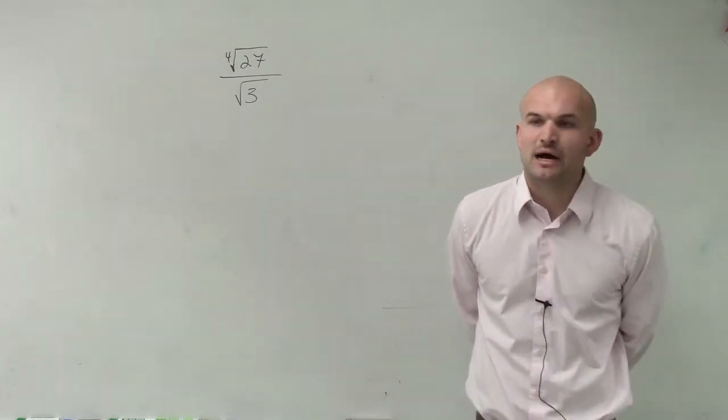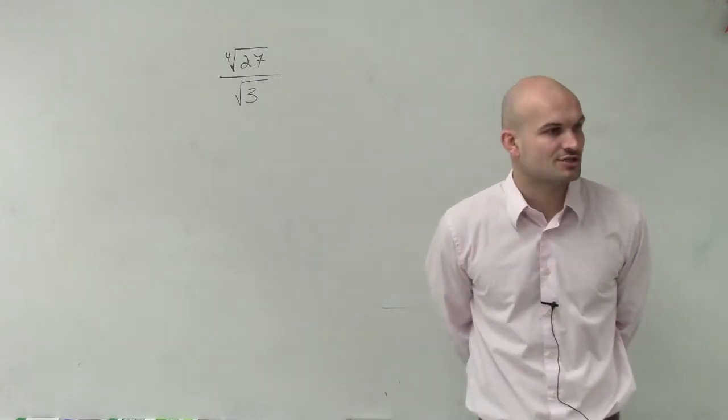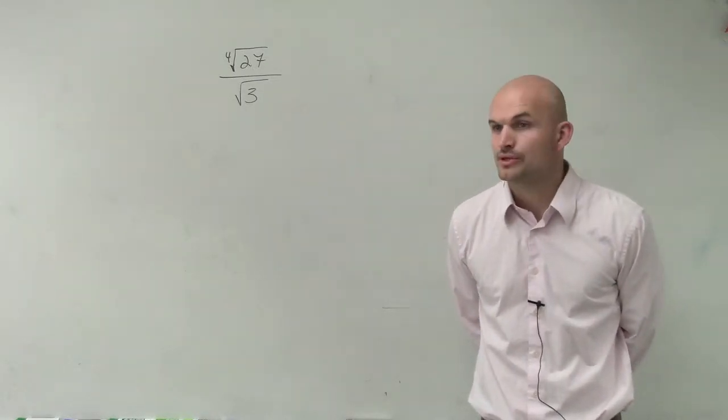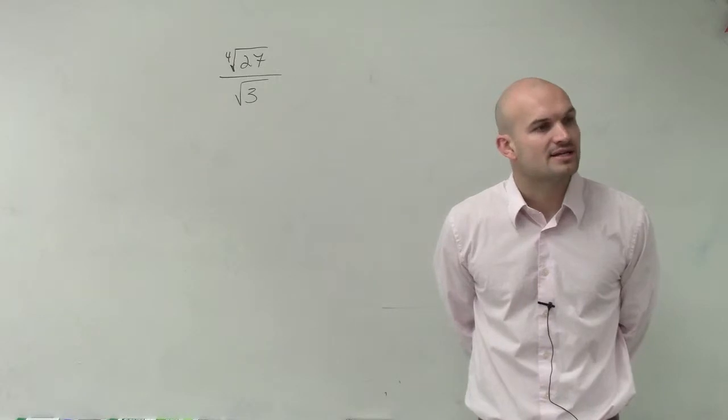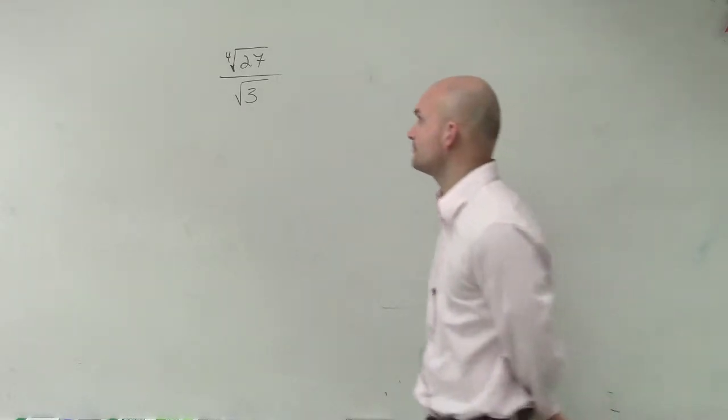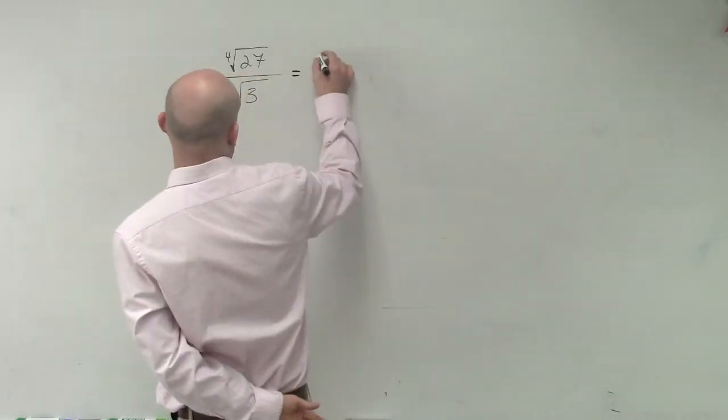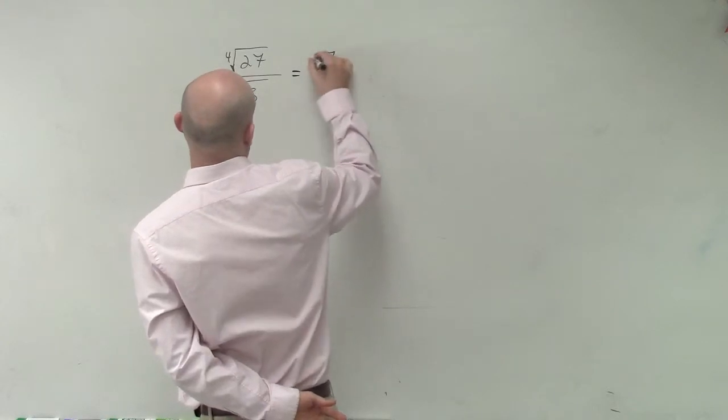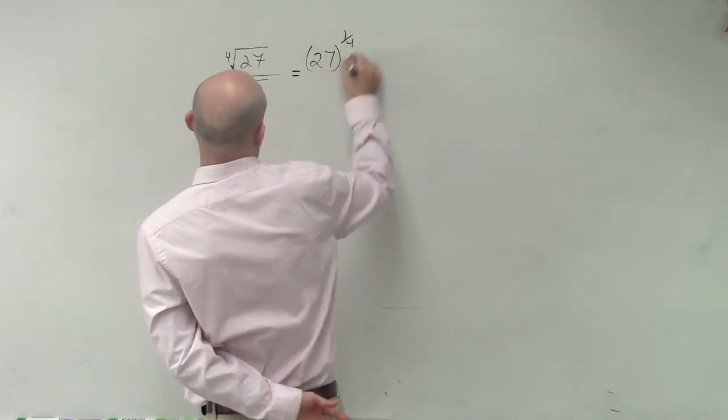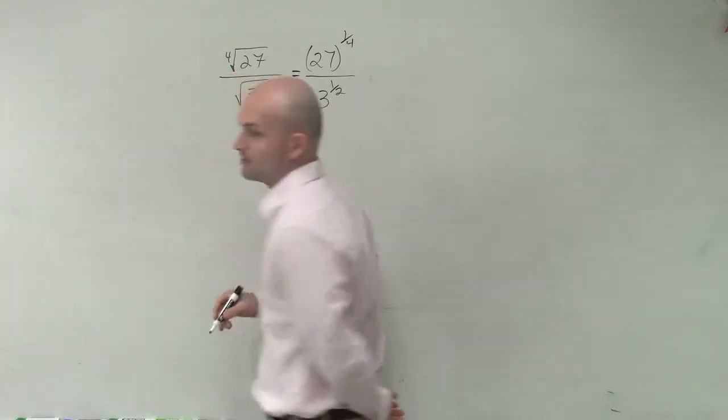So the way that I'm going to solve this problem is I'm going to convert it to rational exponents. And then I'm going to see how I can simplify this a little further. So this becomes 27 to the 1 fourth power over 3 to the 1 half power.